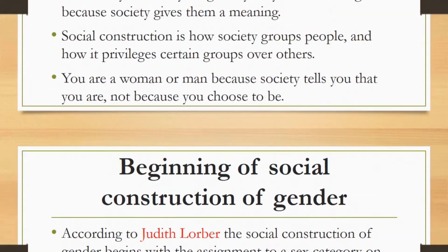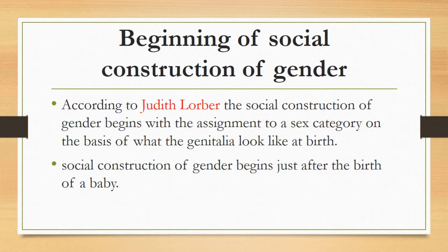Beginning of social construction of gender. According to Judith Lorber, the social construction of gender begins with the assignment to a sex category on the basis of what the genitalia look like at birth. He basically says that the social construction of gender is a process which starts just after the birth of a child. When a child comes into this world, the society starts constructing its gender. At first sight, society sees the genitalia of a newly born baby and decides accordingly that the newly born baby is either male or female. In this way, the social construction of gender begins just after the birth of a baby.